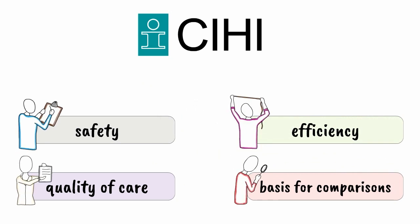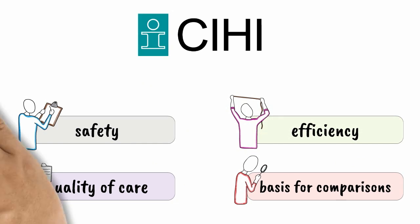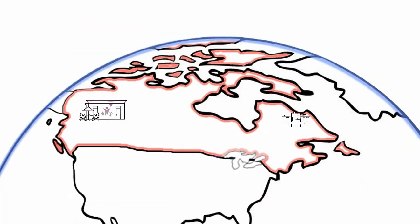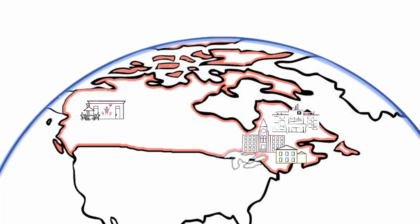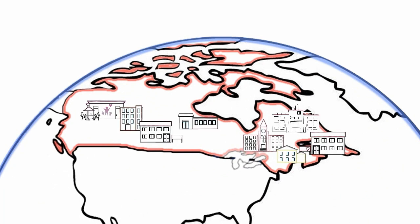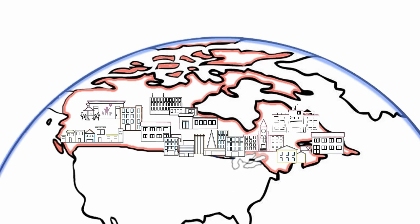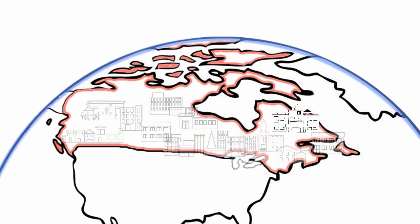So health indicators are vital tools to help anyone who monitors and manages the health of a population and how services are being used. They help staff at all levels of our health systems understand performance at a pan-Canadian, regional, organizational, and even a program level. And in fact, there are different kinds of indicators for different kinds of audiences.